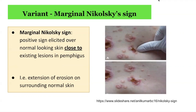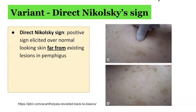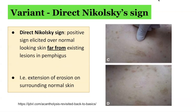There is another variant called direct Nikolsky sign. Direct Nikolsky sign is when a positive Nikolsky sign is elicited over normal looking skin that is far away from the existing lesions in pemphigus. This is another form of extension of erosion onto normal surrounding skin, as demonstrated here on the image on the right hand side.